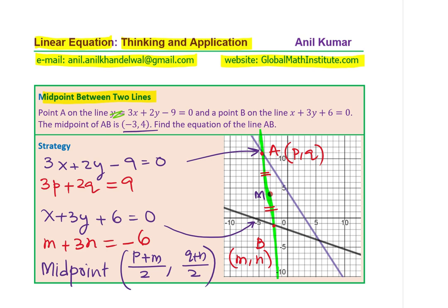And Q plus N divided by 2 will be the Y value. And since we are given M as (-3, 4), we can equate P plus M over 2 to -3. So that can help us solve for P in terms of M or M in terms of P. Similarly, we'll get Q plus N over 2 equal to the Y value 4. Now these two will help us find one in terms of the other.